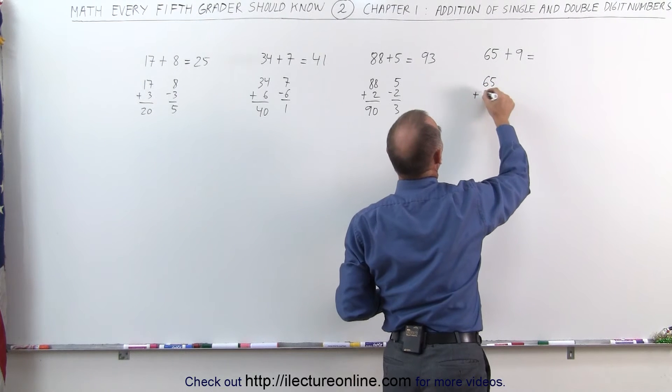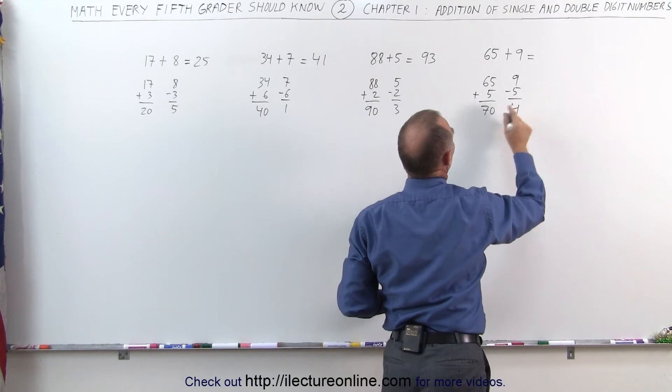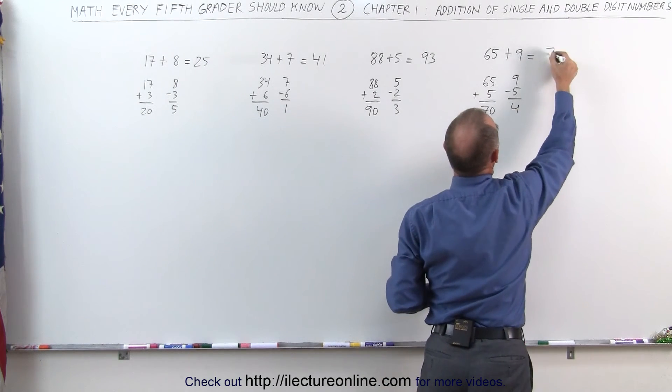65 plus 5, that's equal to 70. Subtract the 5 from 9, that gives me 4. 70 plus 4 is 74.